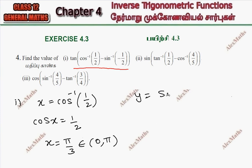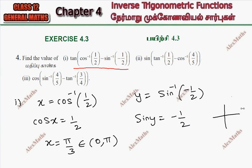Now the value of y is equal to sin inverse of minus 1 by 2. So sin y equals minus 1 by 2. So this is sin negative. That is, this quadrant and this quadrant is negative. But the range of sin inverse is minus π/2 to π/2. This is 0, this is minus π/2, this is π/2.